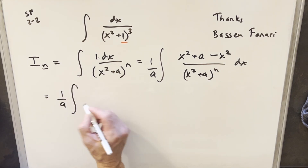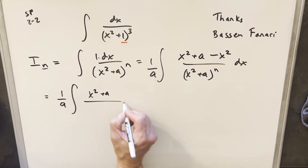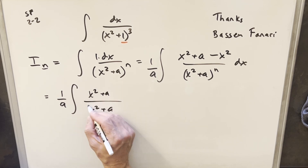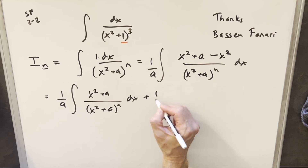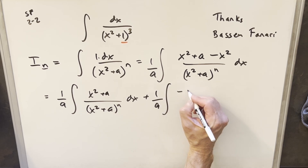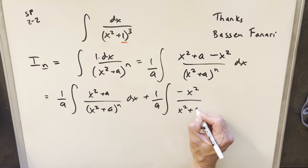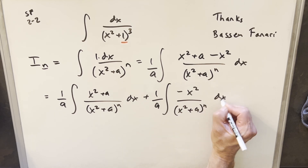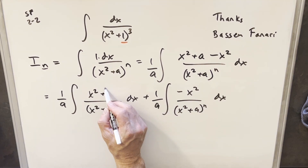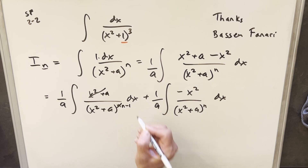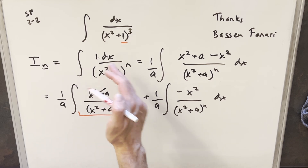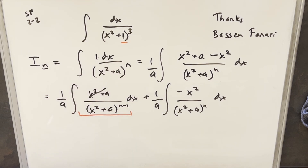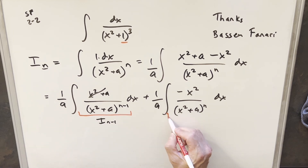From here, I'm going to split this into two integrals. The first one is x squared plus a over the same denominator. For the second one, we still have our one over a in front, and I'll write this as minus x squared over x squared plus a to the n dx. The nice thing is the first integral cancels off one power, giving n minus one. This integral is actually just I sub n minus one.